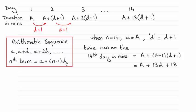So for this sequence, we're looking at when n is 14, the first term a is capital A here, and the common difference d is really d plus 1. So using this formula here then, the time run on the 14th day in minutes will be a plus n minus 1 times the common difference, which is d plus 1. And when you expand this, clean it up, that's what you get.